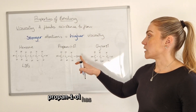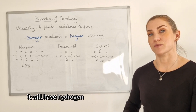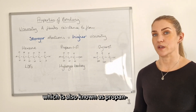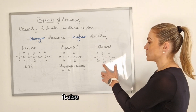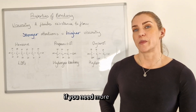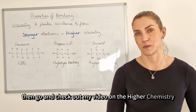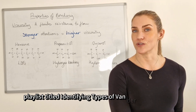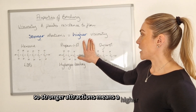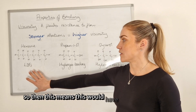Propan-1-ol has a hydroxyl group, so by rule of thumb it will have hydrogen bonding between its molecules. Glycerol, also known as propan-1,2,3-triol, also has hydroxyl groups and will therefore also have hydrogen bonding. Since LDFs are the weakest of all van der Waals forces, hexane would have the lowest viscosity.